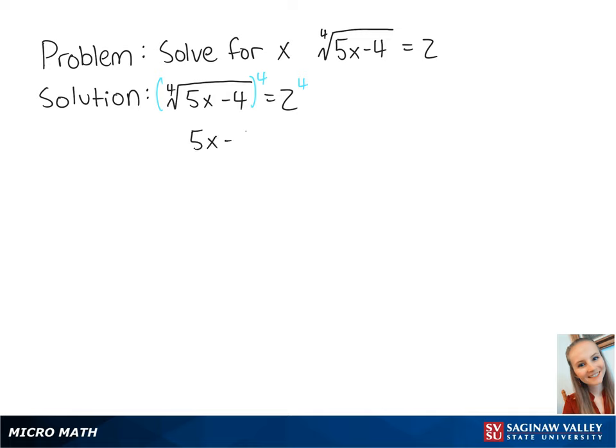This gives us 5x minus 4 equals 16. To eliminate the minus 4 from the left side, we can add 4 to both sides of the equation. This gives us 5x equals 20.